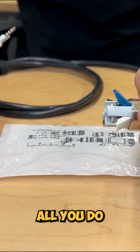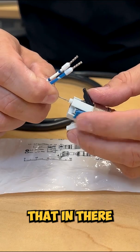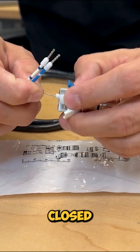After that, all you do is follow the color-coded directions with black being your drain. So go ahead and stick that in there, and then snap that closed. That's snug.